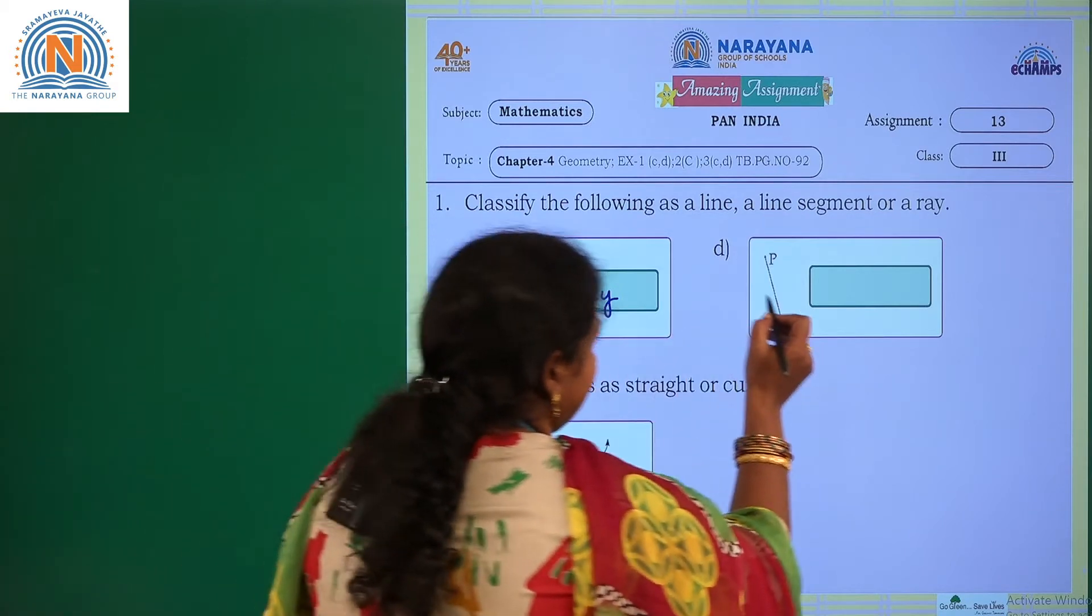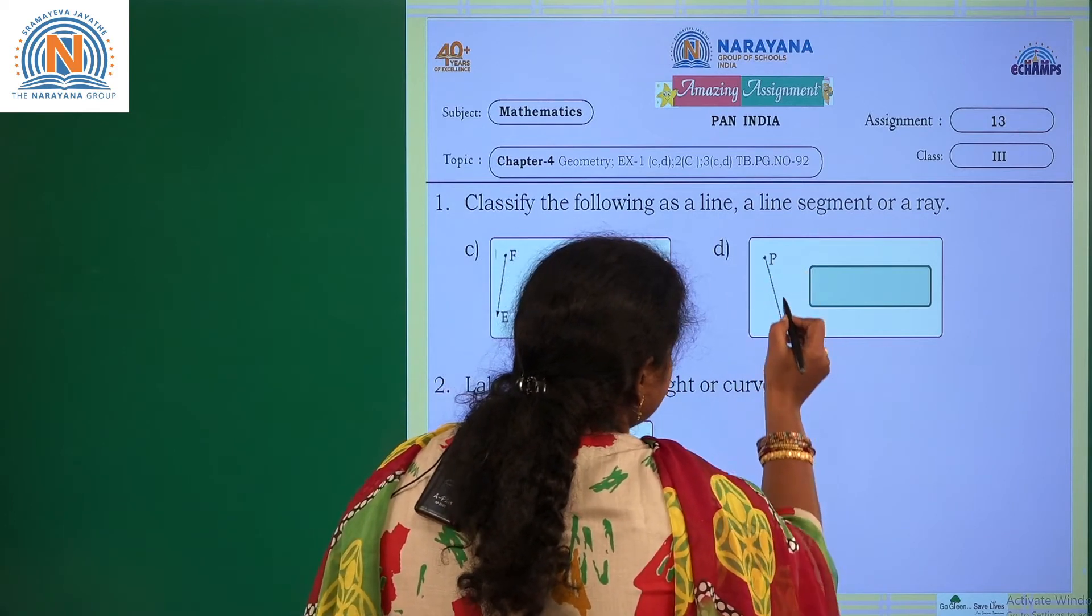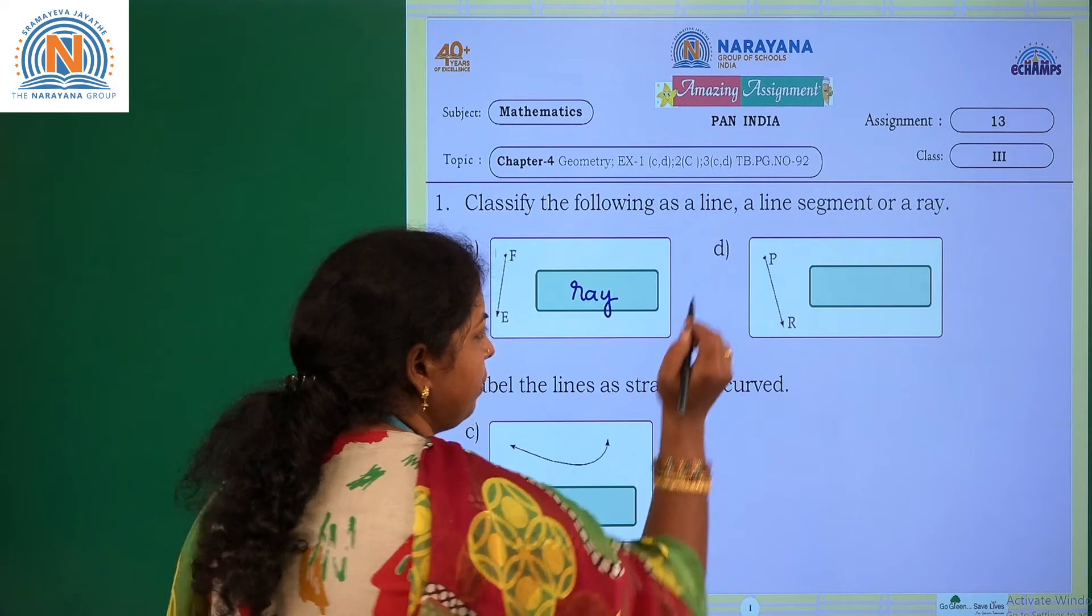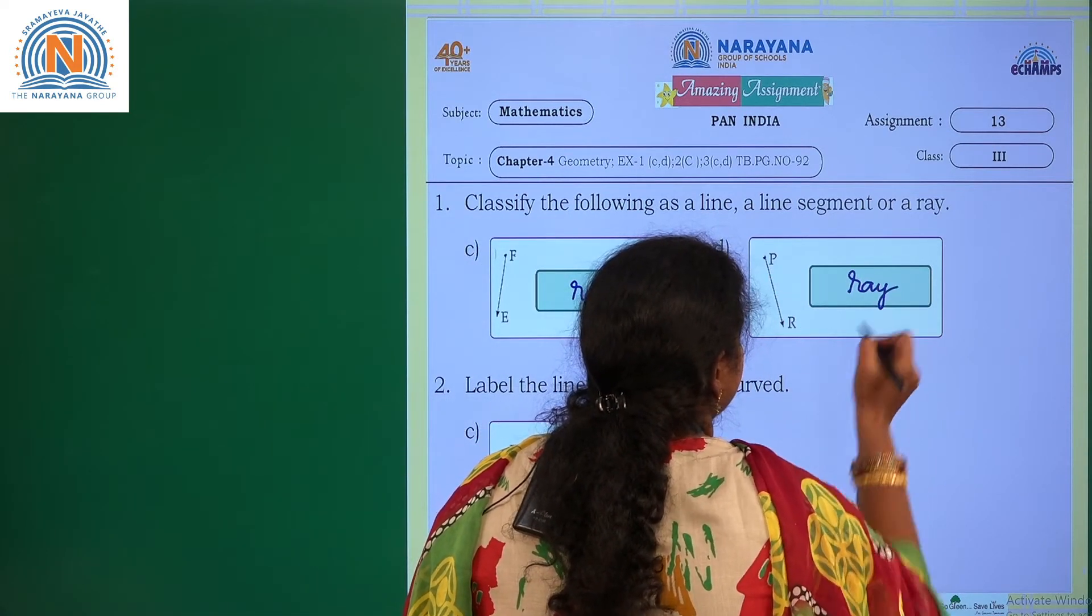Like that, if you observe the second one, P R is there. There is also one initial point and there is no endpoint. So P R is also a ray.